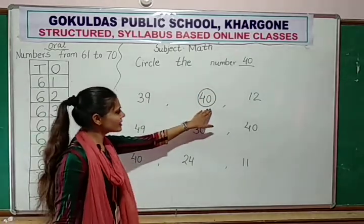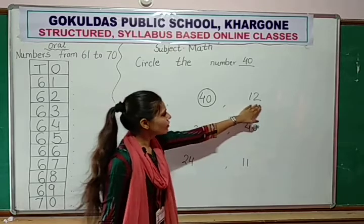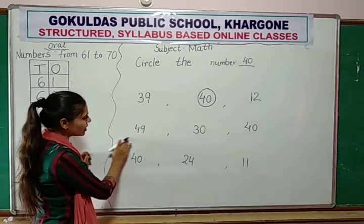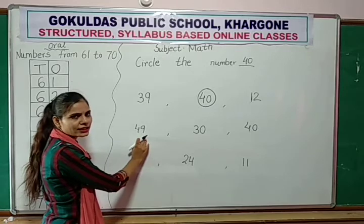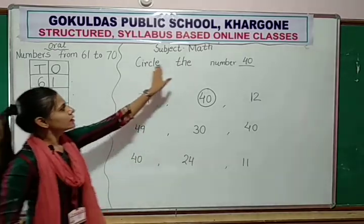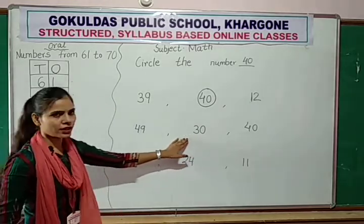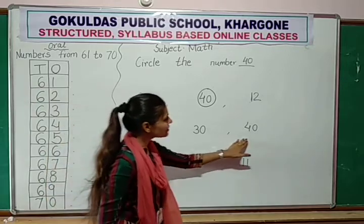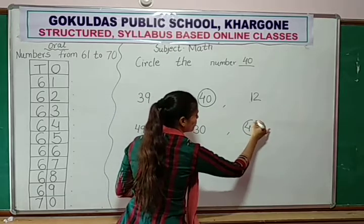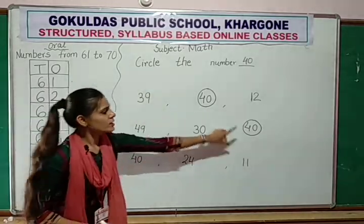Now next. Here this number is 12. Next, move to the next line. The number is 49. Don't circle 49. Circle the number 40. Don't circle 49. Now next: 30, 40 — no circle. Now next: 40, 40. Here also 40. So you circle the 40, because the condition is circle the number 40. Only circle 40.